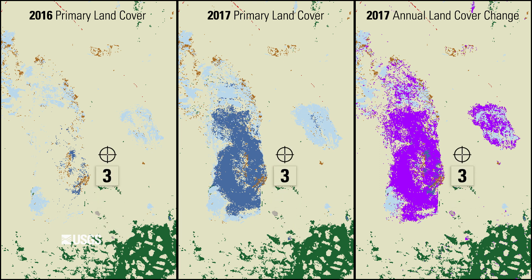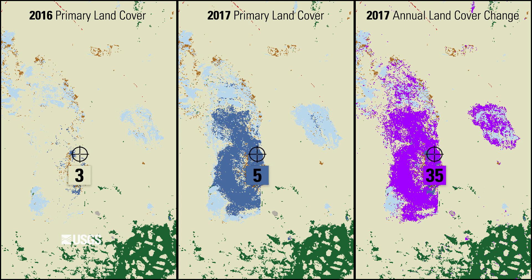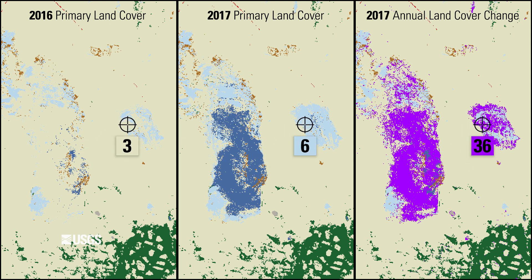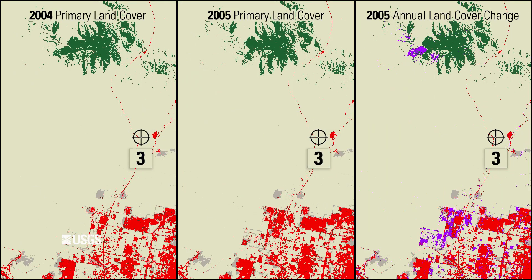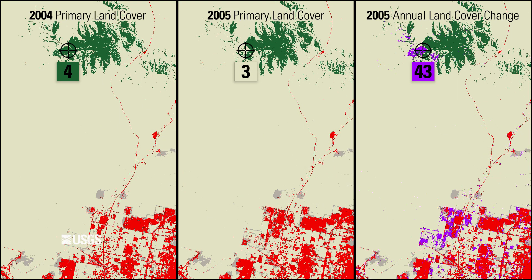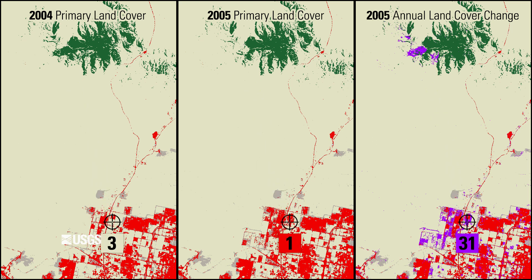Here's a real-world example to better visualize how one year of land cover change data is synthesized from two years of primary land cover product data. Note the colors and values in areas where change is observed versus areas where change is not observed. In another example, different class changes are shown, but the technique for encoding land cover change data into a single product is the same.